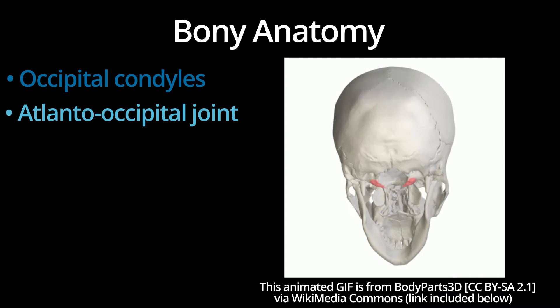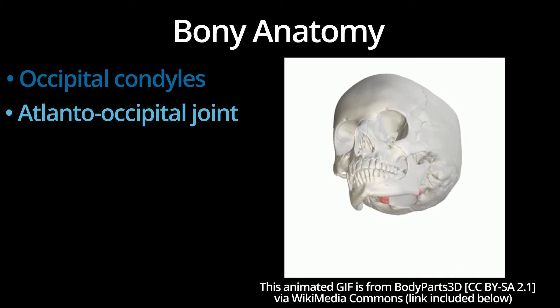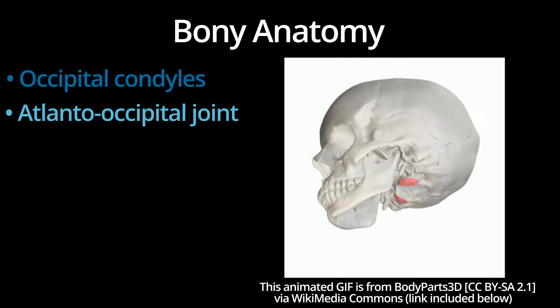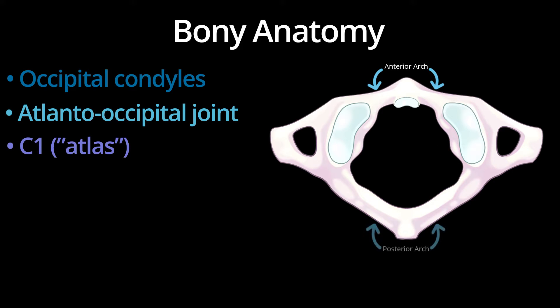C1 is often referred to as the atlas, and C2 is often referred to as the axis. C1 is unique because it does not have a body, and it's instead a ring-shaped structure. C1 has bilateral superior articular processes that articulate with the occipital condyles. C1 has an anterior arch and a posterior arch, as well as two transverse processes.